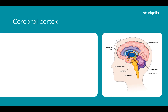Moving on to the sections of the brain, we're looking at the cerebral cortex. Looking at this diagram here, we can see that the cerebral cortex is this pink layer. You may have learned about it previously — it includes the prefrontal cortex, parietal lobe, temporal lobe, occipital lobe. The cerebral cortex stores long-term explicit semantic and episodic memories — potentially unlimited in amount and duration — including knowledge and episodes of our life.